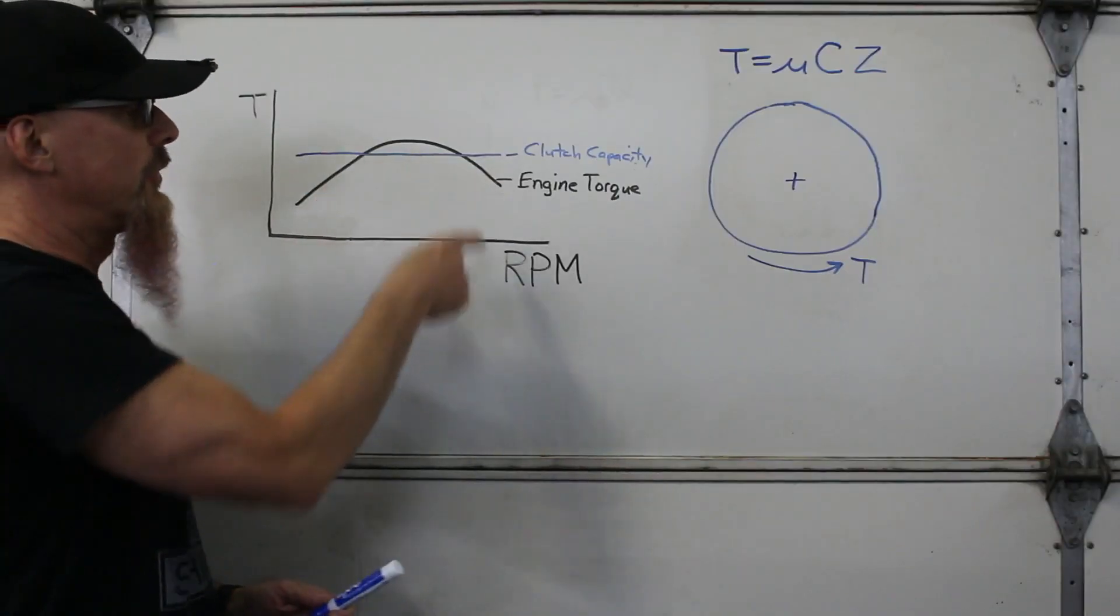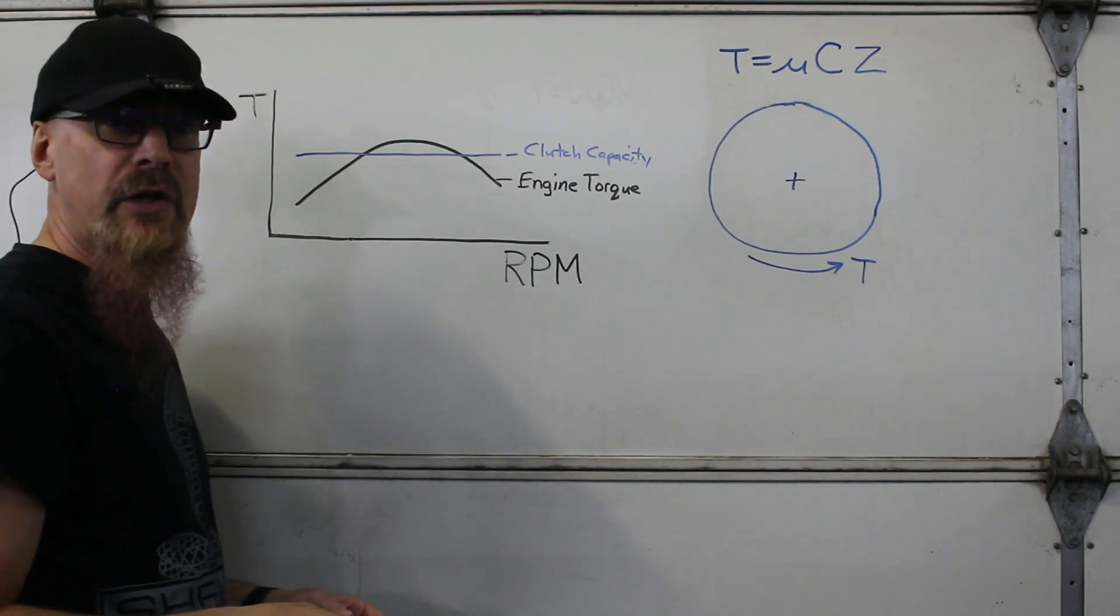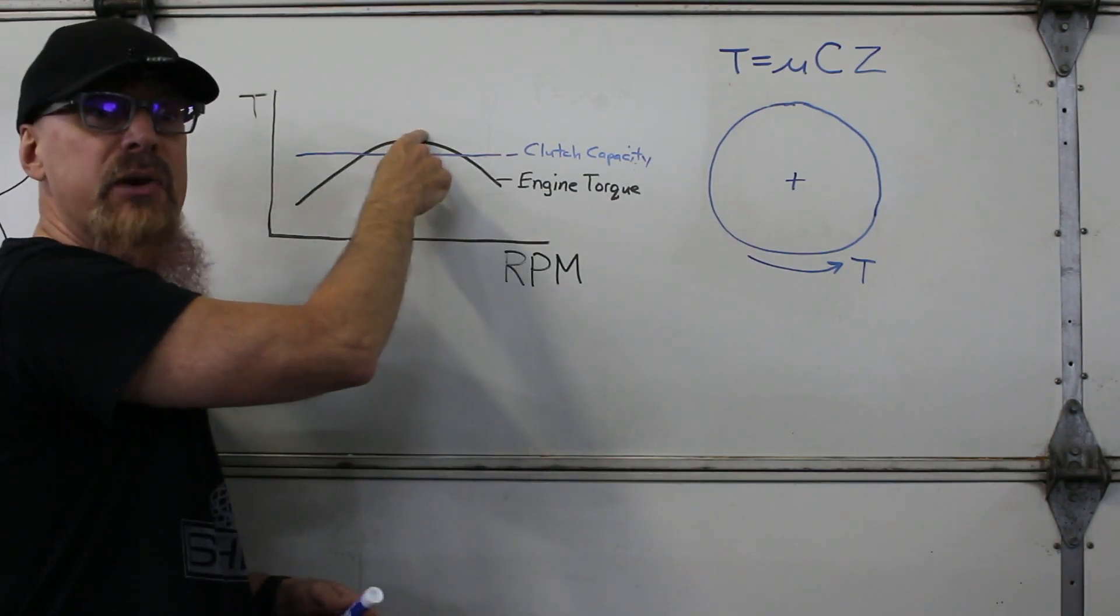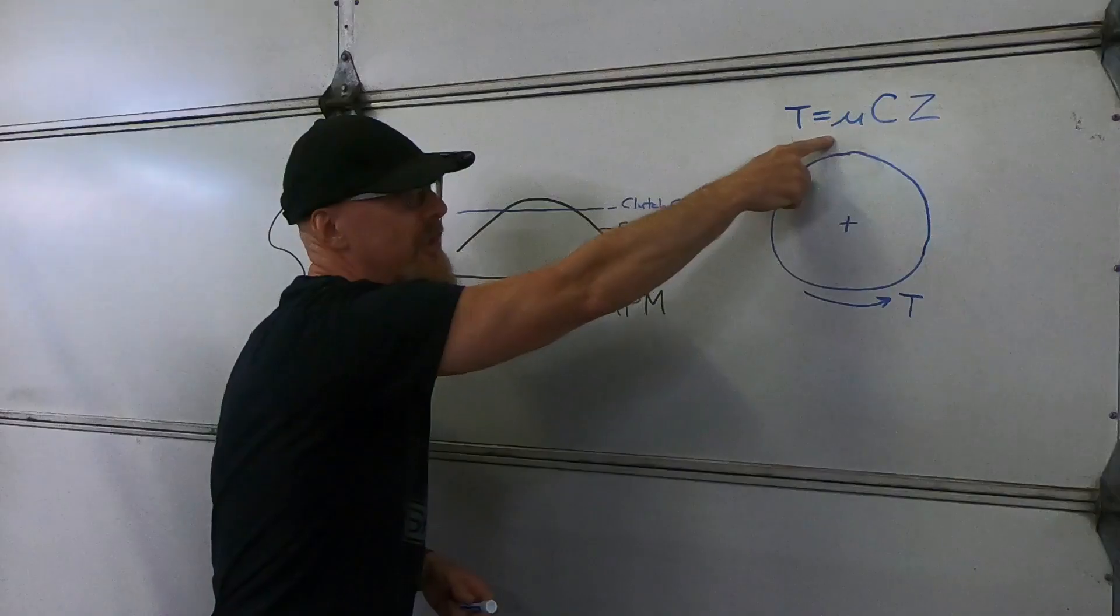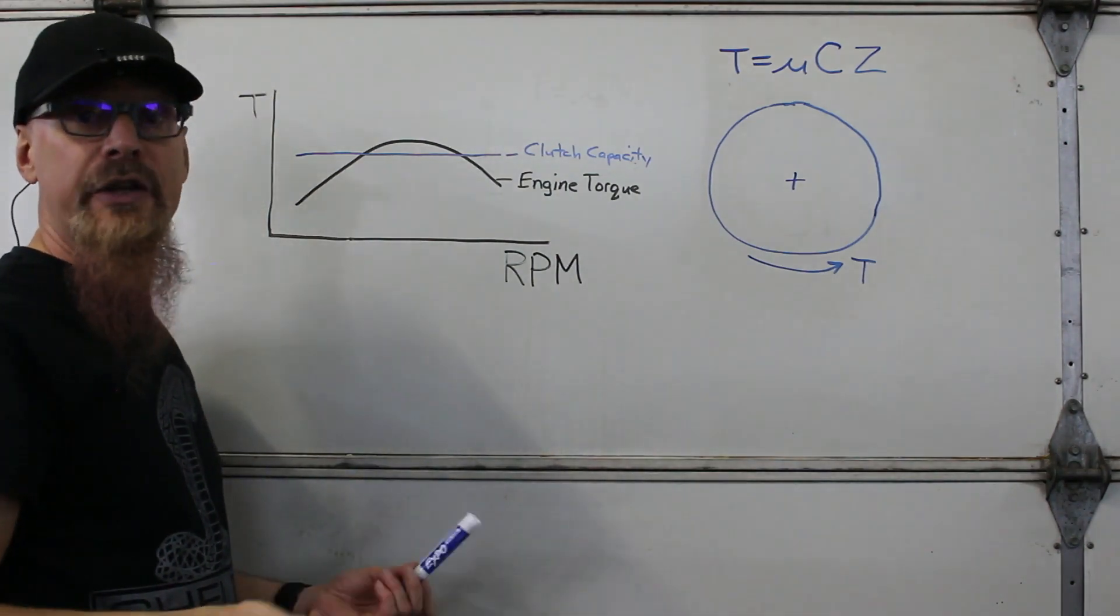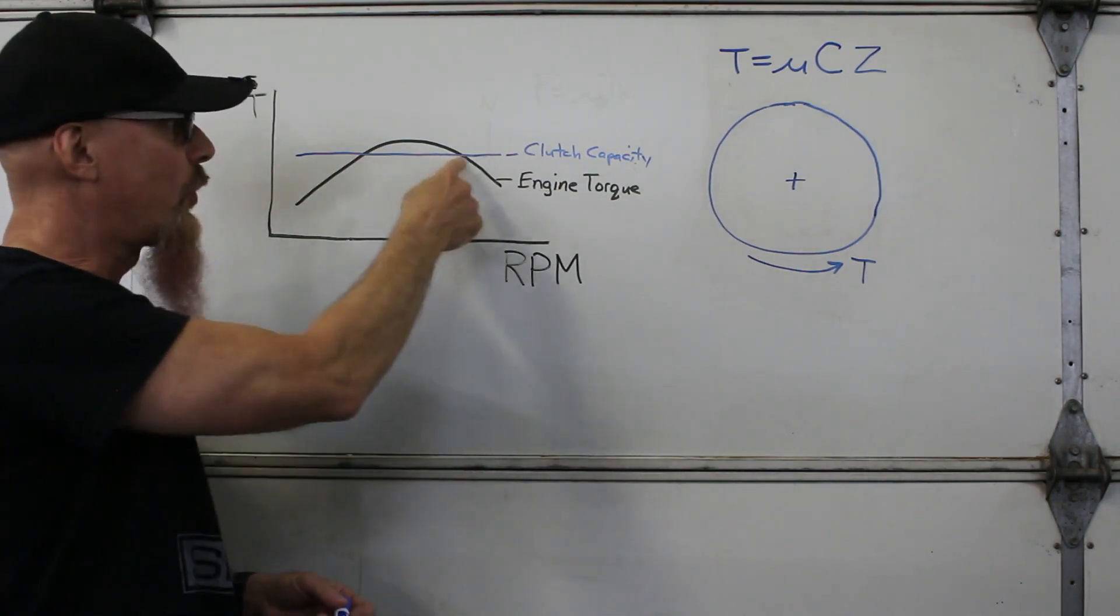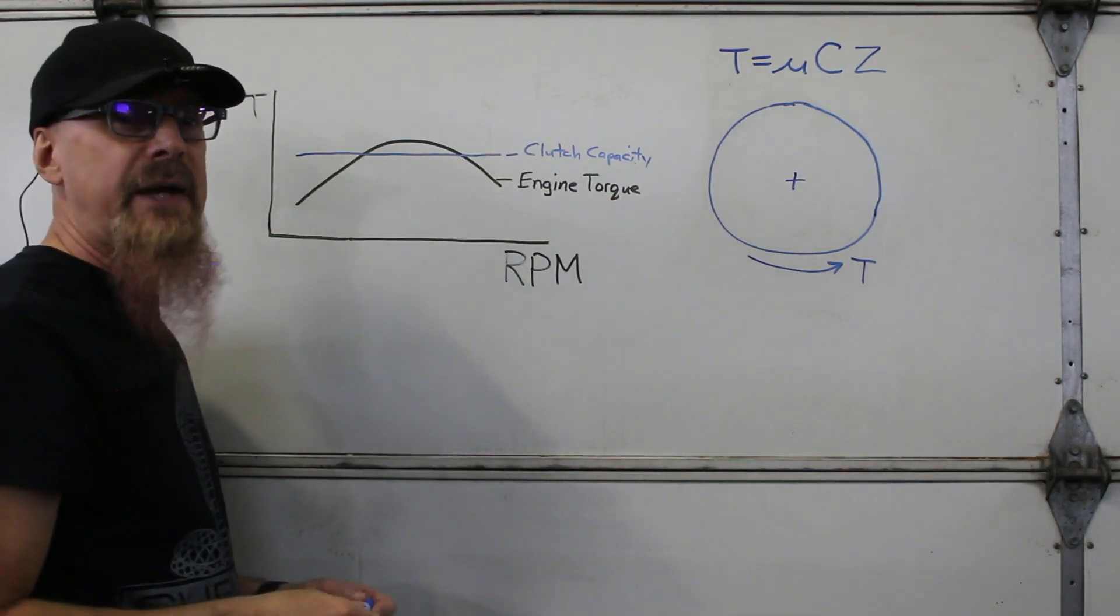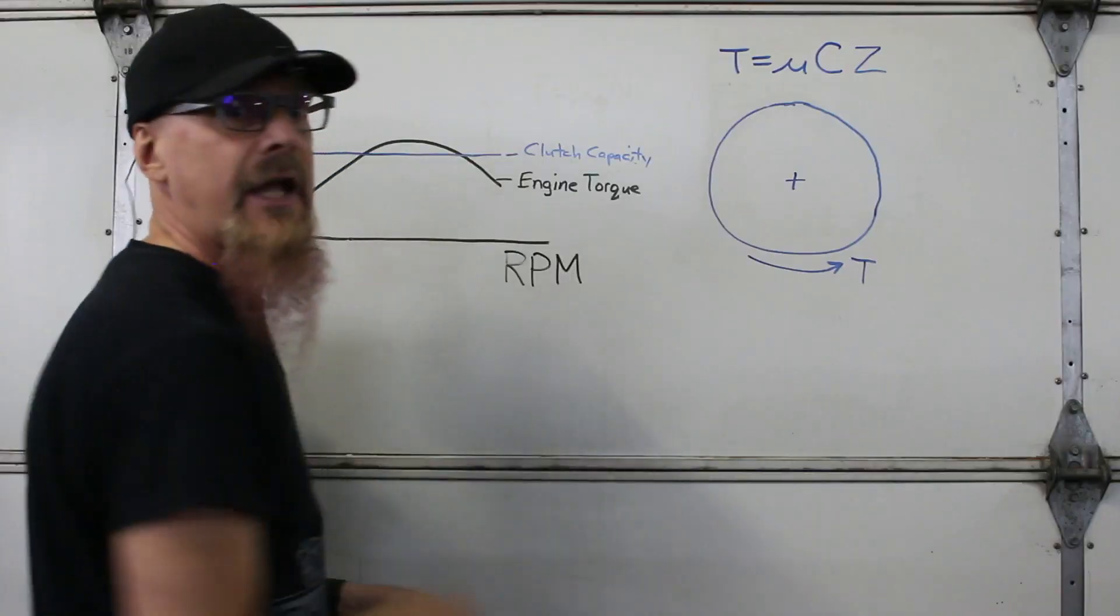Here's a typical torque versus RPM curve for an engine. Now what happens if we don't have enough clutch torque capacity? In other words the engine torque applied to the clutch is greater than the torque capacity the clutch can generate from its friction coefficient and its clamping force. The clutch will then slip and engine RPM will increase since the clutch can't generate enough torque to hold the engine back. So to understand clutch capacity we need to understand friction coefficients and clamping forces.